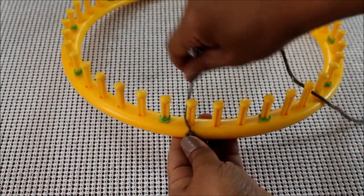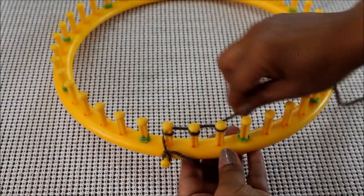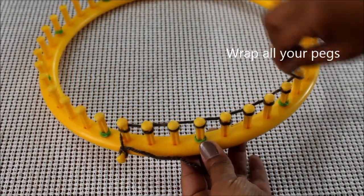If you don't have an anchor peg you can put it on the top but I'd rather not. Then wrap all of your pegs.